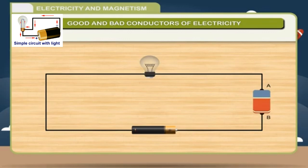Remove the clip. Now, fit a rubber eraser. Does the bulb light up? No. आप इस gap में conductors और insulators को place करके देख सकते हैं. अगर bulb glow होगा तो वो good conductor है और bulb glow नहीं होगा तो वो insulator है.